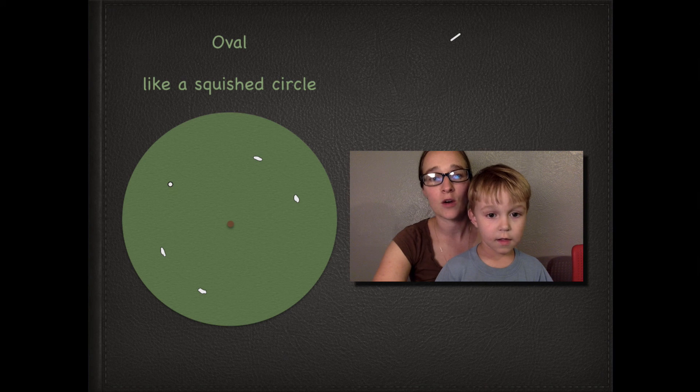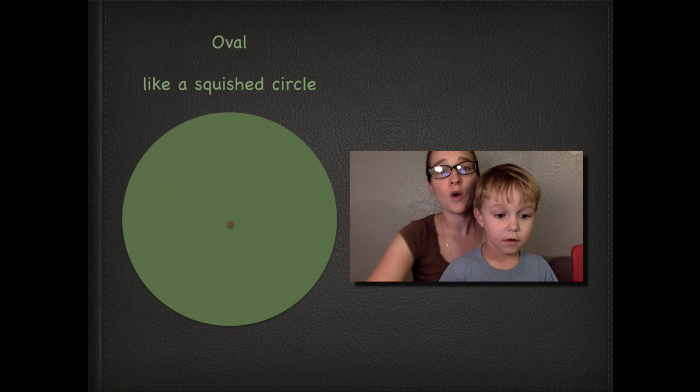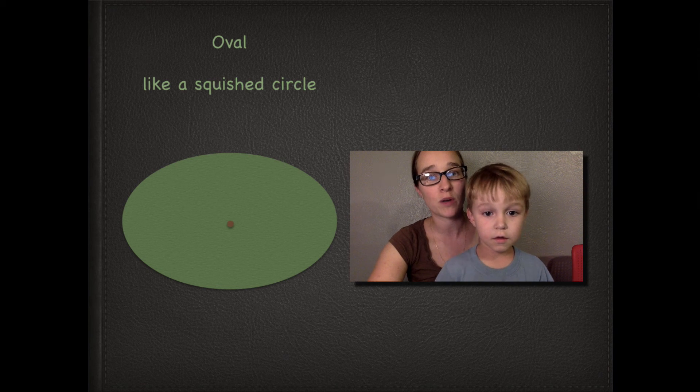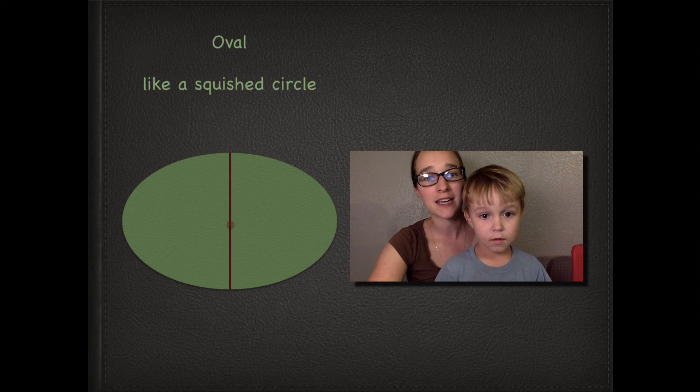Now we're going to look at our oval. Our oval is like a squished circle. You can see it still has that midpoint there. Now I'm going to add our diameter again.